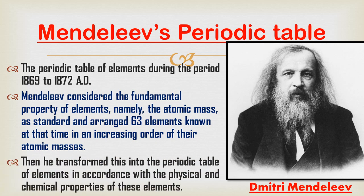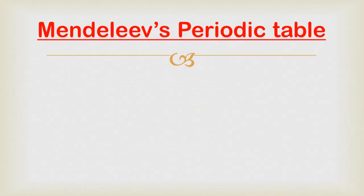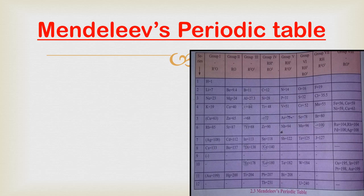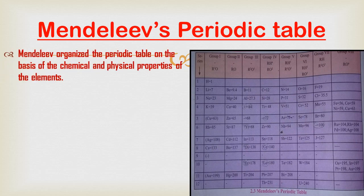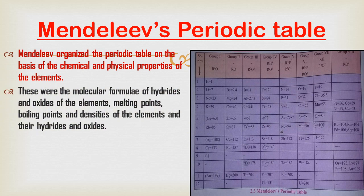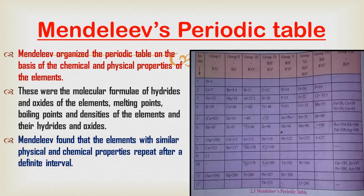He then transformed this into the Periodic Table of Elements in accordance with the physical and chemical properties of these elements. Mandeliev organized the Periodic Table on the basis of chemical and physical properties such as the molecular formula of hydrides and oxides, melting point, boiling point, and densities of the elements and their hydrides and oxides. Mandeliev found that elements with similar physical and chemical properties repeat after a definite interval — for example, in group 7, halogens like fluorine and chlorine repeat after every definite interval.